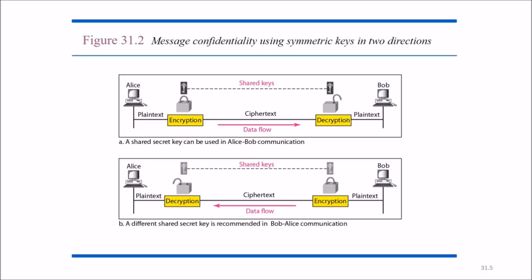Message confidentiality using symmetric key works like this: Alice encrypts data with a shared key, producing ciphertext from plaintext, and Bob decrypts the ciphertext with the same shared key to recover the plaintext. Different shared secret keys are recommended for each communication session. If this key is shared and someone grabs it, they may be able to decrypt or even encrypt the data.